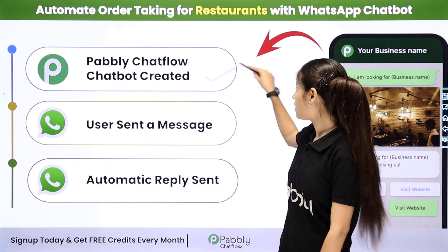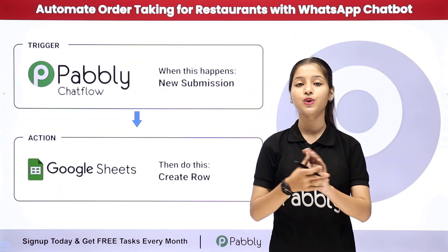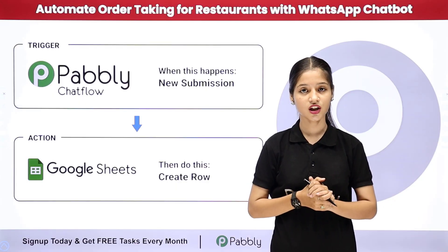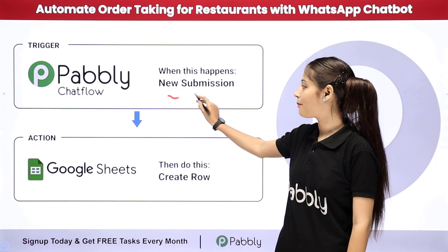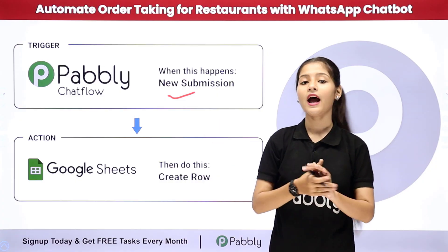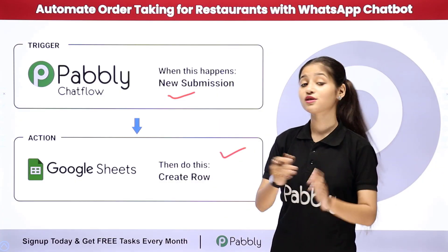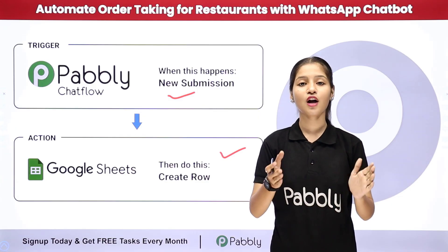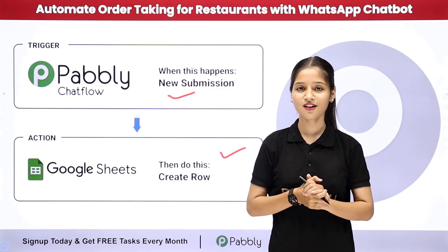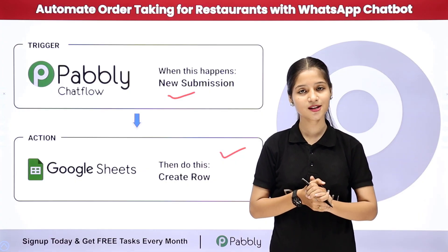In this video I will also teach you how to store your user data into your Google Sheet, where we can take our trigger application as Pabbly Chartflow and action application as Google Sheet. It is only possible by using Pabbly Connect. Now to see the working of this amazing automation and learn the process step by step, let me take you to my screen.